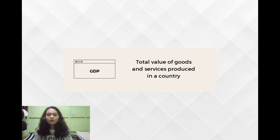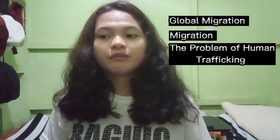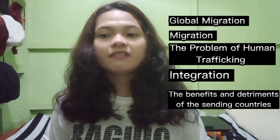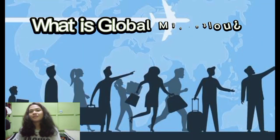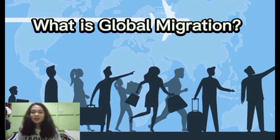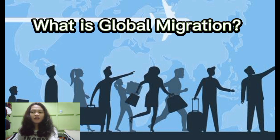Let us now proceed with our lesson on global migration. Inside this topic we will define global migration, the problem of human trafficking, integration, and the benefits and detriments for sending countries. Global migration is a situation in which people go to live in foreign countries, especially in order to find work. Most global migration is from developing countries to developed ones.